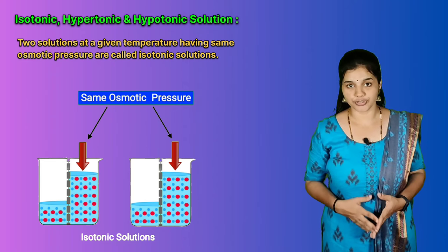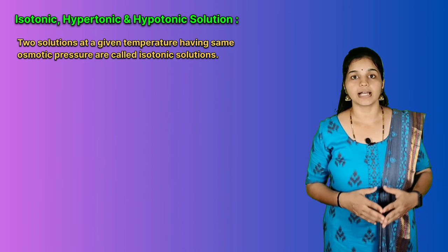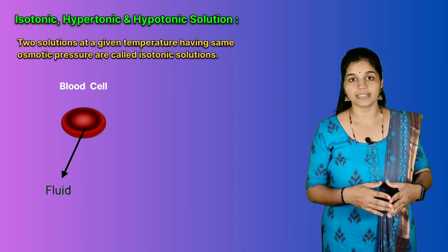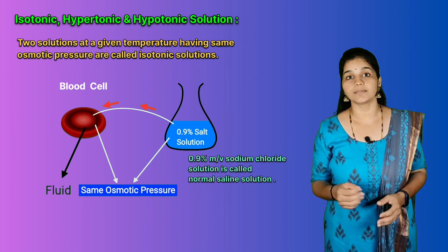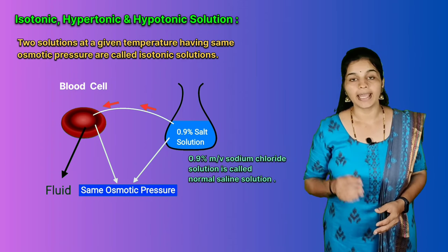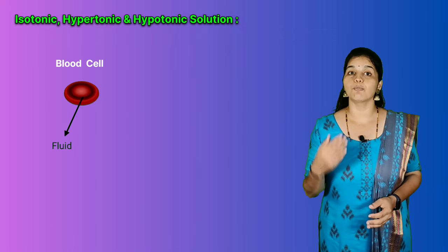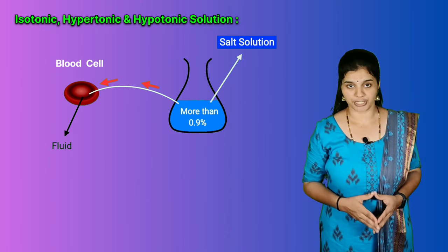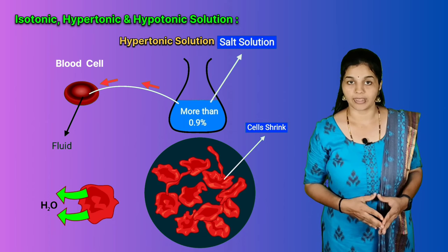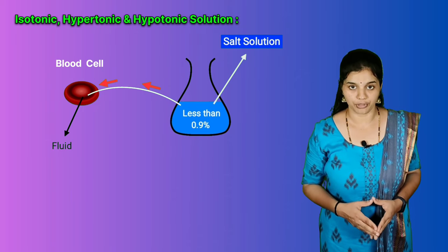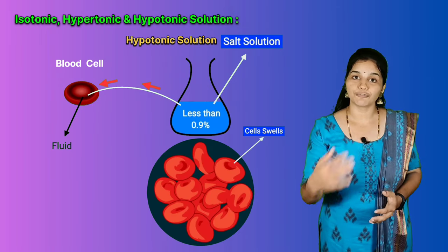For example, the osmotic pressure associated with fluid inside blood cells is equivalent to that of 0.9% mass by volume sodium chloride solution, called normal saline solution, which is safe to inject intravenously. If cells are placed in a solution containing more than 0.9% mass by volume sodium chloride, water will flow out of the cells and they would shrink — such a solution is called hypertonic. If the salt concentration is less than 0.9% mass by volume, the solution is hypotonic, and cells placed in it would swell because water flows into them.